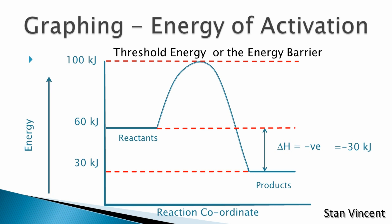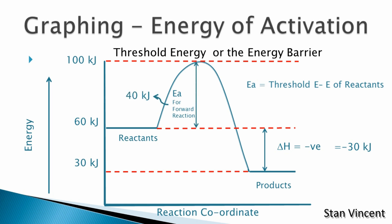The reactants have to gain energy so that the energy of the reactants will become 100 kilojoules. Then, if they undergo proper collision — which means they have the right amount of energy and proper orientation — they may lead to the formation of products. In order to calculate the energy of activation, we need the threshold energy and the energy of the reactants. If you subtract the energy of the reactants from the threshold energy, we get the energy of activation. For the forward reaction, the energy of activation will be 100 minus 60, which is 40 kilojoules. When the molecules gain 40 kilojoules of energy per mole, they change into products because the collisions at this point will become effective.